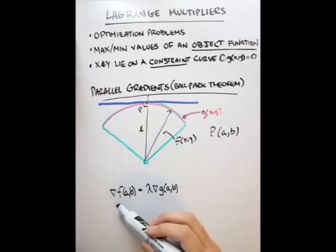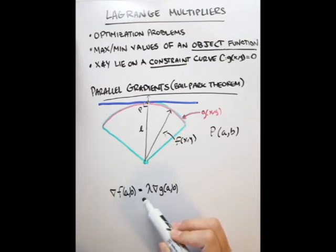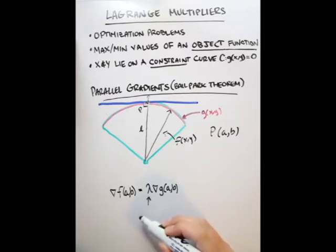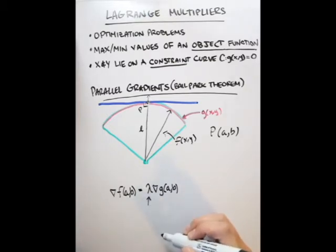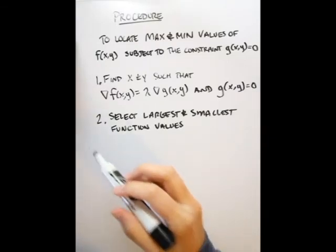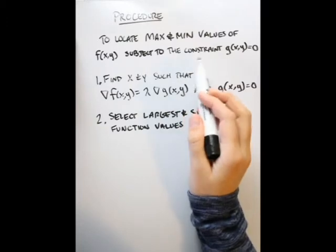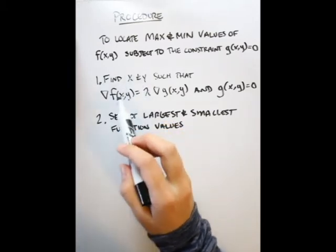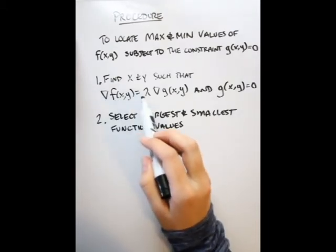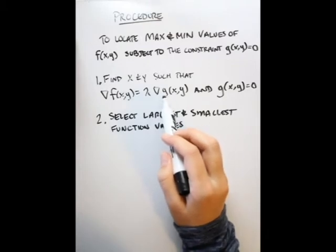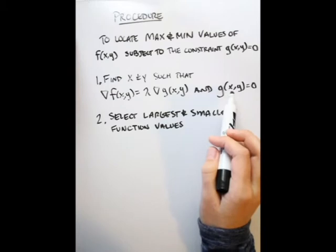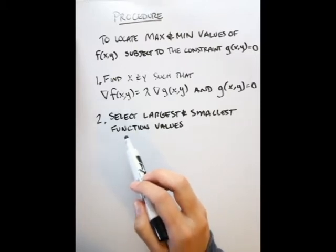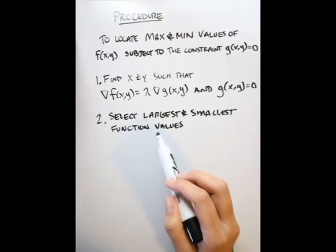What this leads to mathematically is that the gradient of our function at a point is actually equal to a scalar multiple of the gradient of our constraint curve at that point. This scalar multiple is what we call the Lagrange multiplier — lambda is used to denote it. So to locate maximum and minimum values of our object function subject to the constraint function, step one is to find x and y such that the gradient of f equals lambda times the gradient of g, and x and y also satisfy the constraint function. Then we evaluate our function at those values, select the largest and smallest function values, and those are our maximum and minimum values.